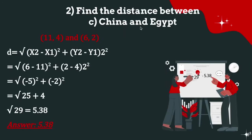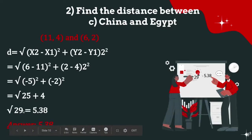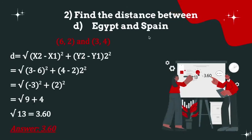Find the distance between China (11, 4) and Egypt (6, 2). Using the distance formula: √((6 - 11)² + (2 - 4)²) = √((-5)² + (-2)²) = √(25 + 4) = √29, which equals 5.38.